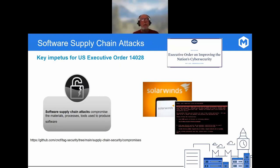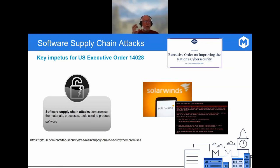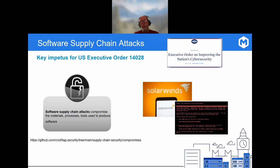The increase in software supply chain attacks has been serious enough to provide impetus for a U.S. federal executive order on cybersecurity. These attacks look to compromise things specific to the software process — they can attack raw materials like your first-party source repo, third-party dependencies, the processes you use like your build process, your tool chain, or the environment hosting your build. A key characteristic common to all these is that it's an upstream attack that benefits from a scaled-out impact downstream in terms of the damage done.